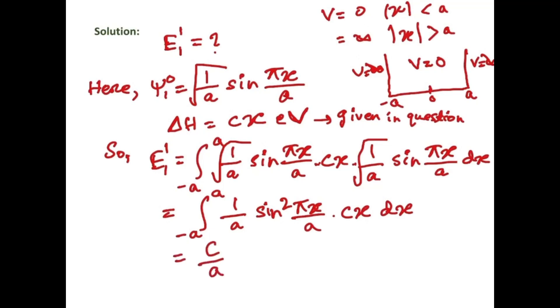That will be equal to c by a integration from minus a to plus a into sin square pi x by a into x dx. Here c by a is a constant.